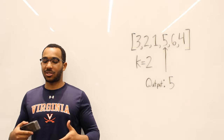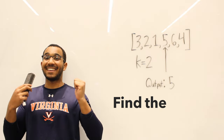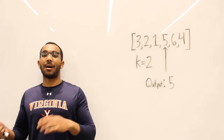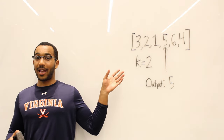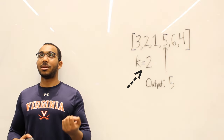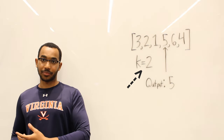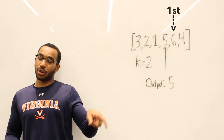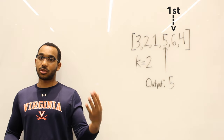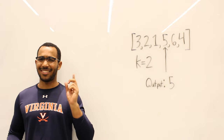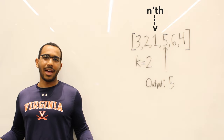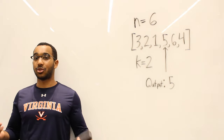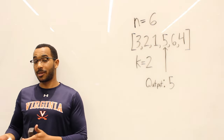So what this problem asks of us is to find the kth largest item. The array might be sorted or it might not be sorted. We have an array, k is two, meaning we want the second largest item. The first largest item is the largest item in the array, and the nth largest item is the smallest item in the array. So the sixth largest element is one because one is the smallest element.